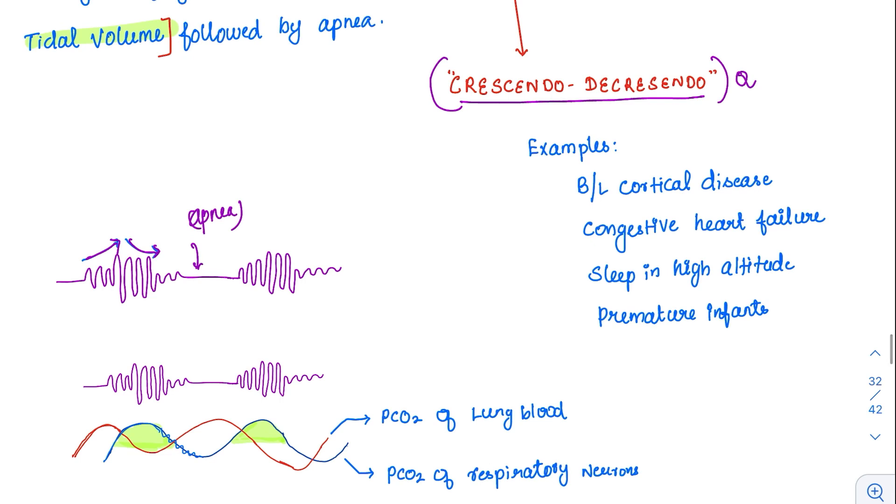What are the examples for this? The examples are bilateral cortical disease, congestive heart failure, sleep in high altitude, and premature infants. In all of these, this kind of pattern happens.